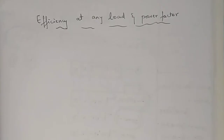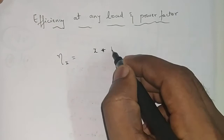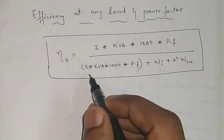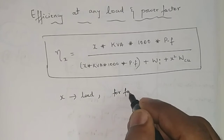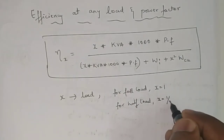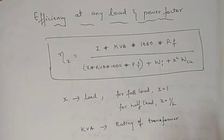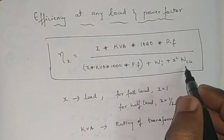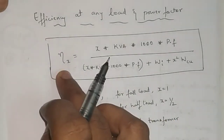There is one more formula you need to remember in order to find out efficiency at any load and power factor. The formula is: eta equals x·kVA·1000·cos φ divided by x·kVA·1000·cos φ plus Wi plus x²·Wcu. Here x is the load — for full load x equals 1, and for half load x equals 1/2. kVA is the rating of the transformer, cos φ is the power factor, Wi is iron loss, and Wcu is copper loss.